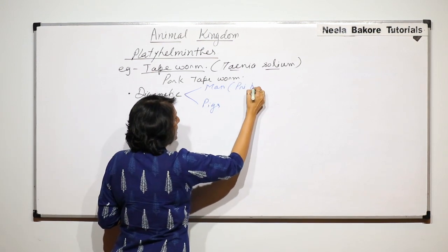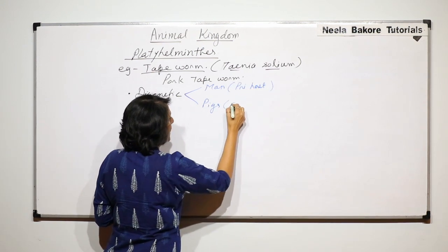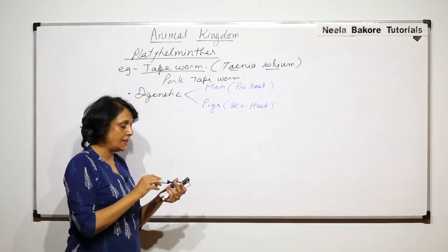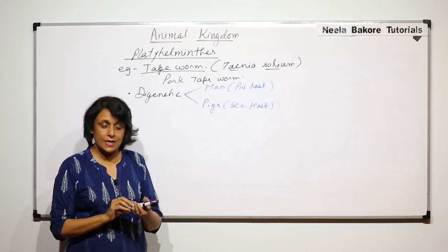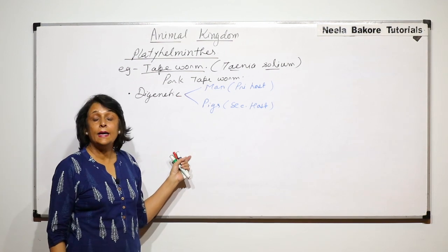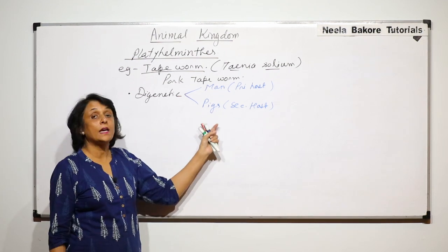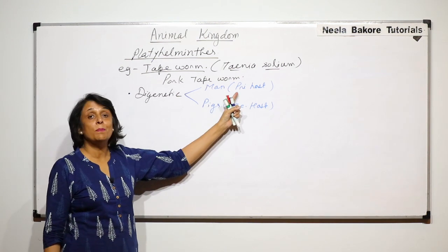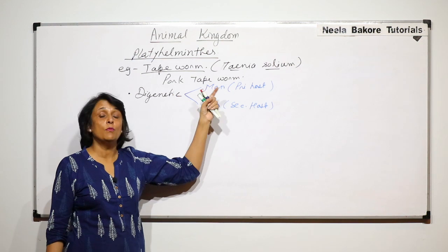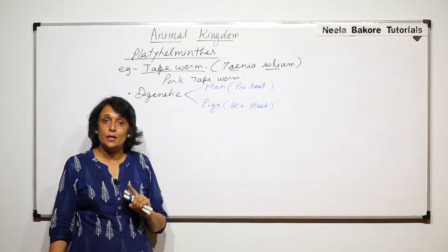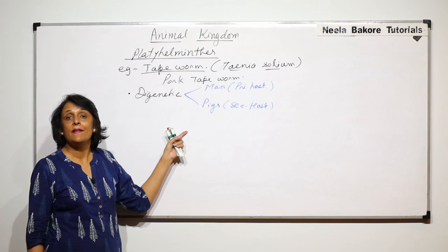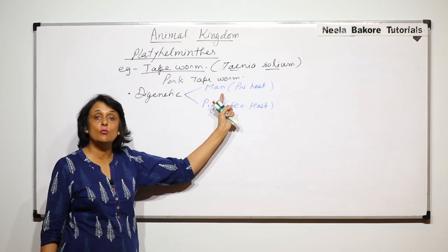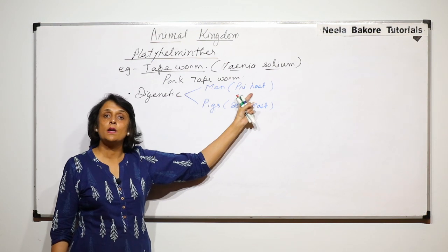Man is the primary host and pig is the secondary host. Now what is the criteria of calling a host as primary or secondary is that if the sexual reproduction of the parasite is completed in the host, in whichever host, then that becomes the primary host. So this means that this worm completes its sexual reproduction in humans and that is why humans become the primary host.